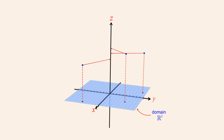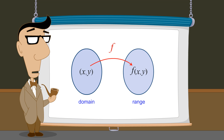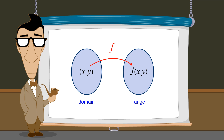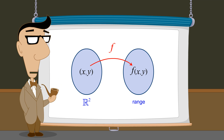Since the domain is two-dimensional and the range is one-dimensional, this function maps points on a plane to points on a line. So multivariable functions, like single-variable functions, have one domain and one range. For functions of two real variables, the domain is typically R², and if the function can produce any real value, its range is R.